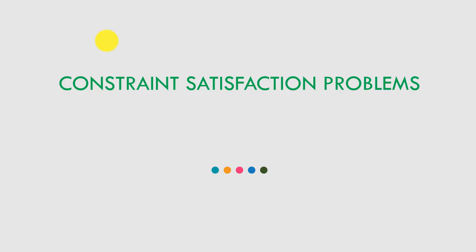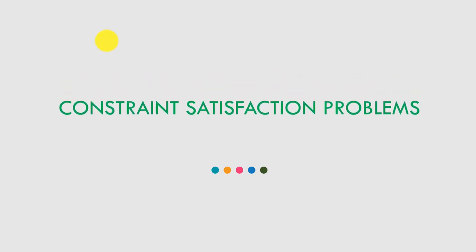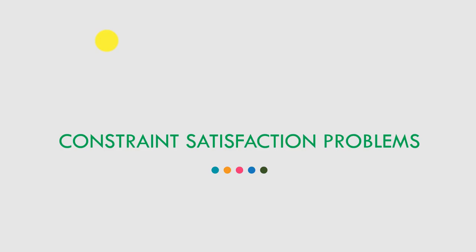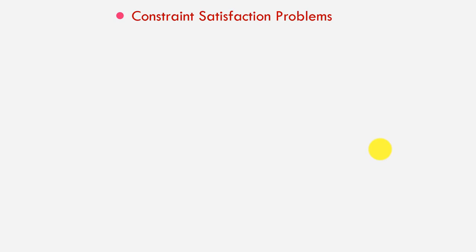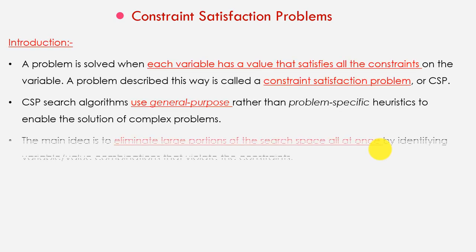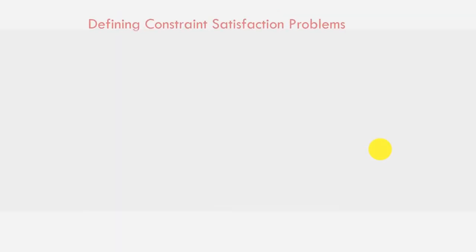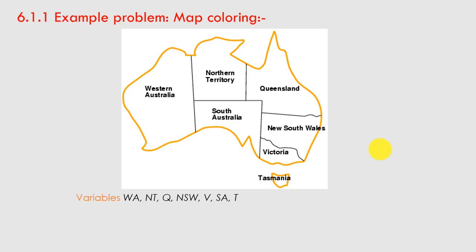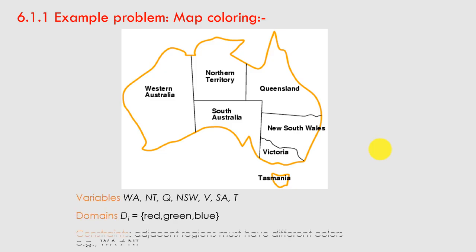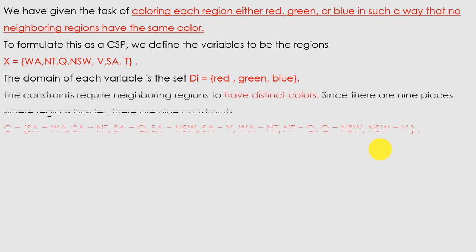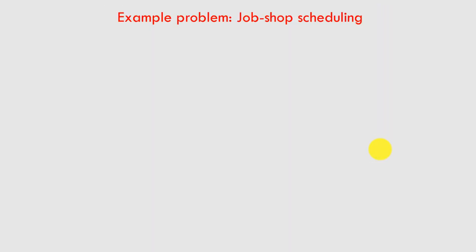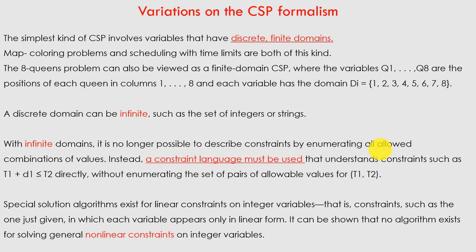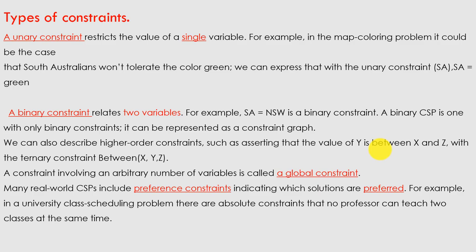Good morning. We have started the chapter on Constraint Satisfaction Problems already. Today we are going to talk about the remaining concepts. In the last lecture we covered the constraint satisfaction problem, how to define it, how to define the constraints, and how to satisfy them. We also saw the map coloring problem, the job scheduling problem, and variations in CSP, including types of constraints.